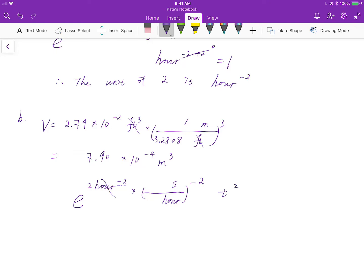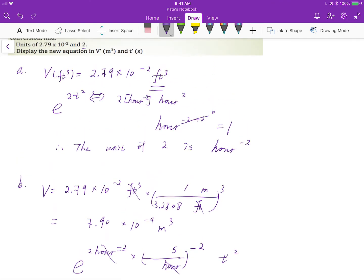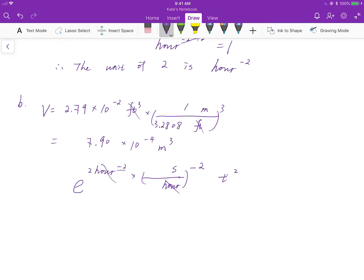In this way, cancel out the hour to negative 2, and second to negative 2, and t is in seconds. Then this would be t prime. Then cancel out the unit. Then you will have a dimensionless group in the exponent.